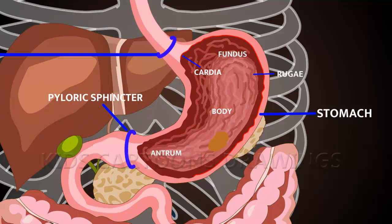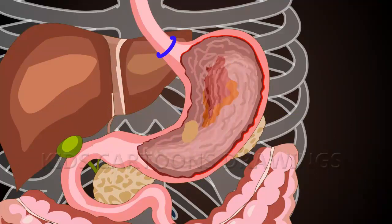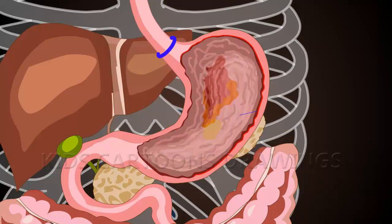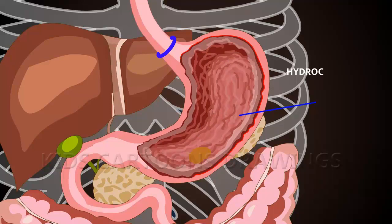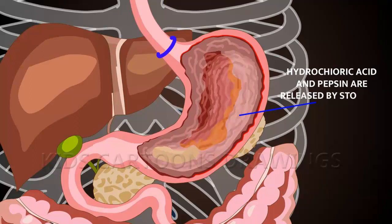The pylorus starts contractions continuously in the stomach, churning and mixing the food bolus with hydrochloric acid and the digestive enzyme pepsin. Neural and hormonal stimulation causes pepsin to be released by the stomach, which starts the chemical digestion of protein, reducing the bolus to a fluid-like substance called chyme.